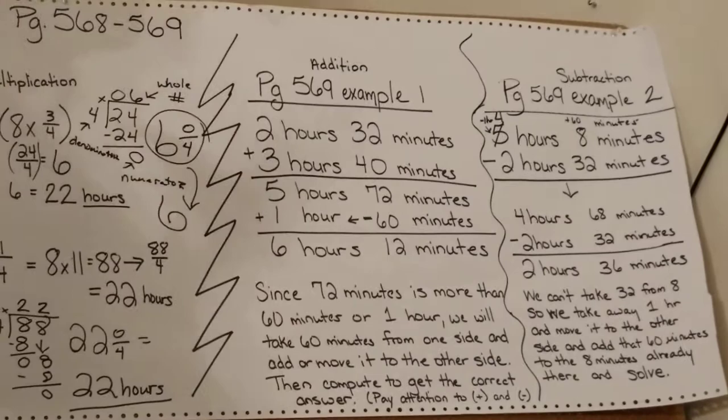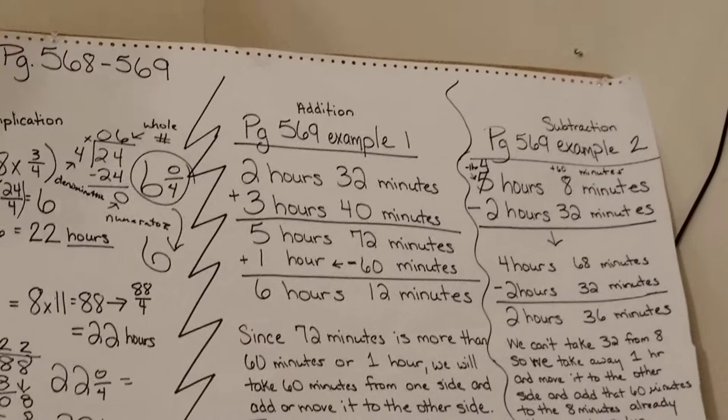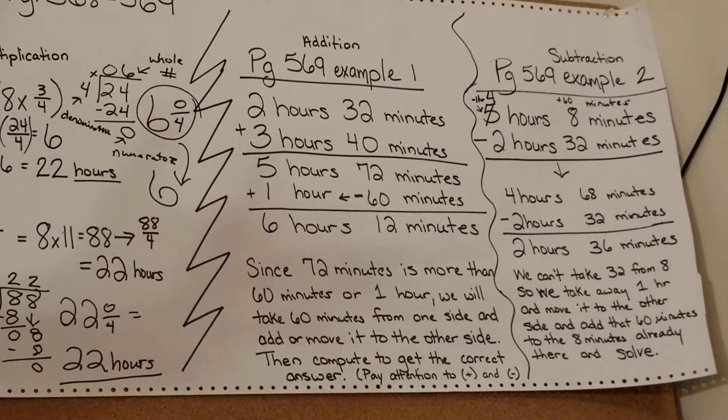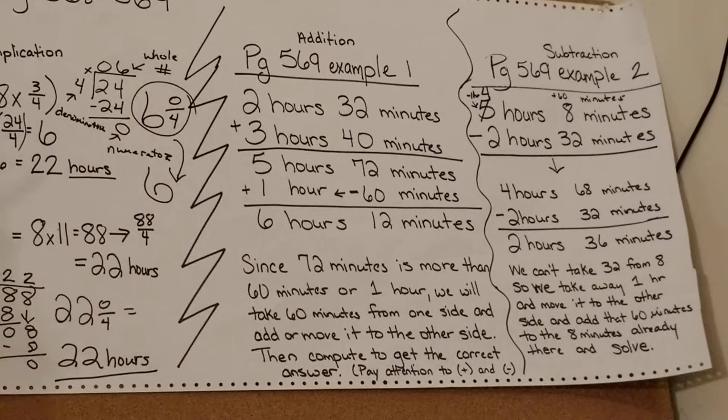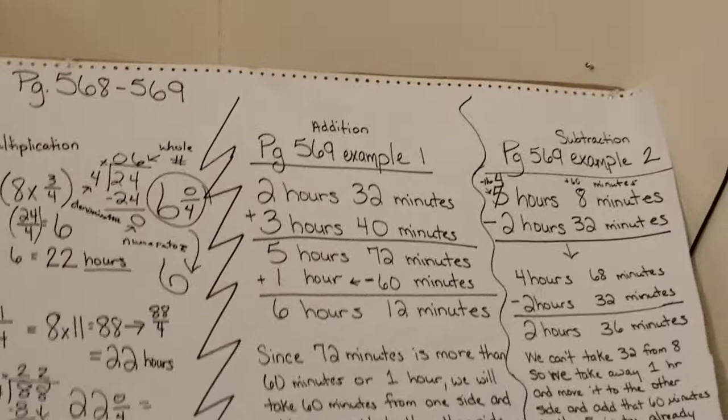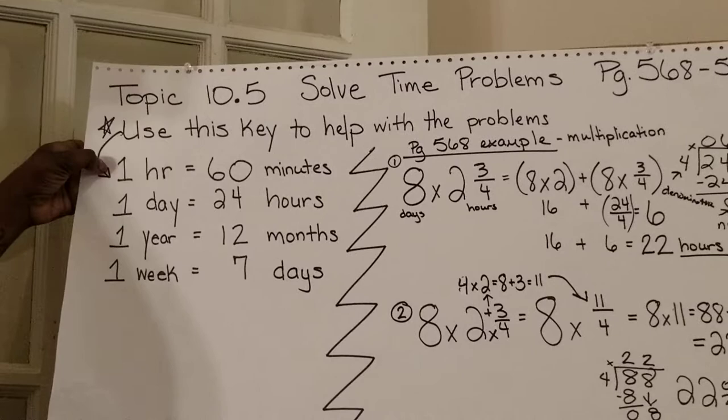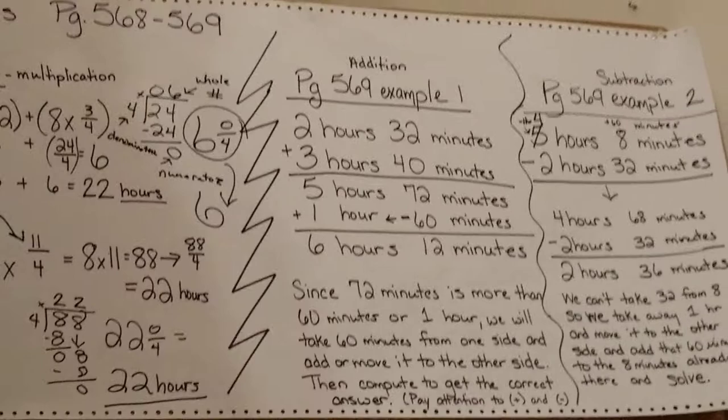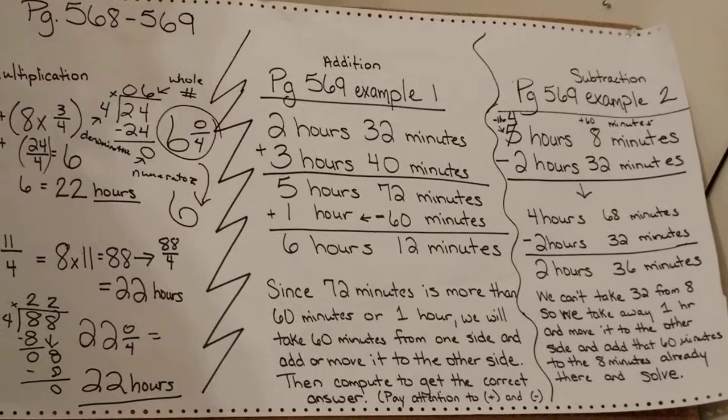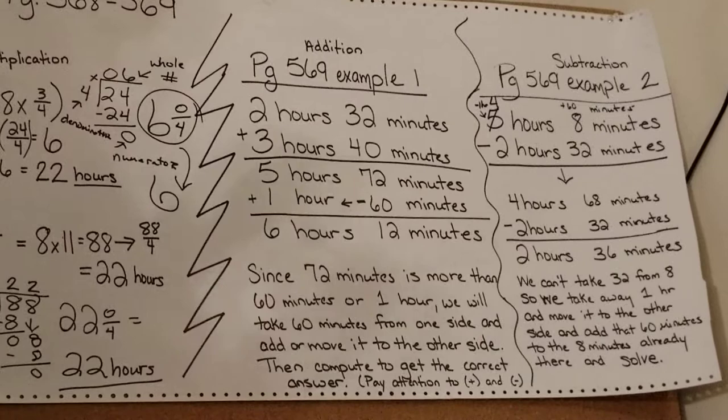But when have you ever heard someone say, oh, I'll be there in 72 minutes? Hardly ever. Usually they say 15, 20, anything up to an hour. Or anything over an hour, we start to move those minutes into making them an hour. We're going back to thinking about my key, where we had 1 hour equals 60 minutes, because we're dealing with hours and minutes.